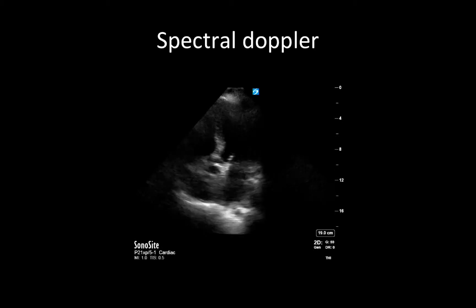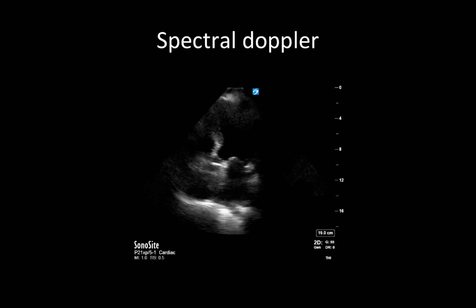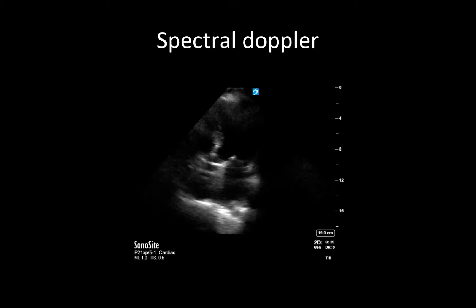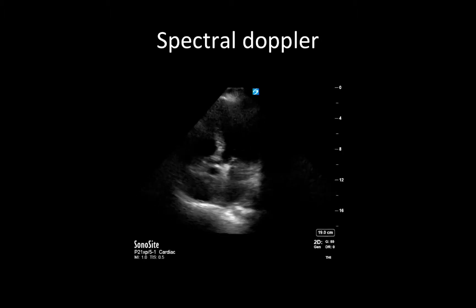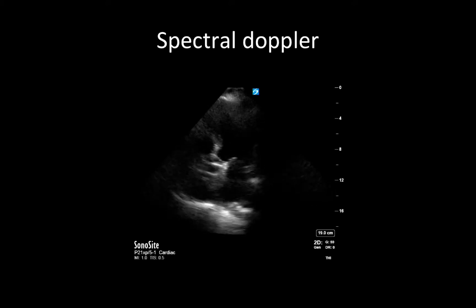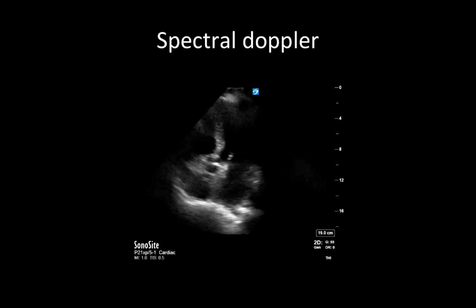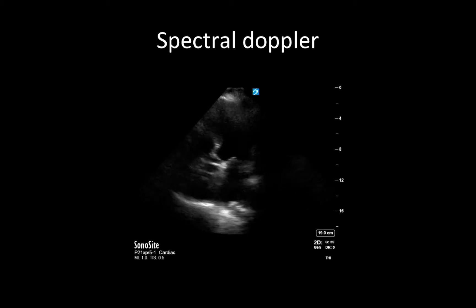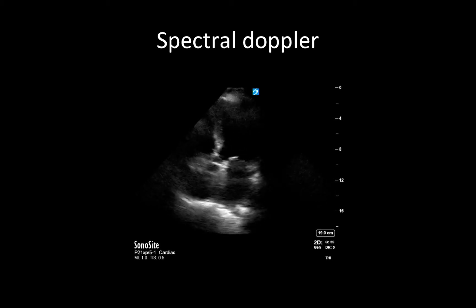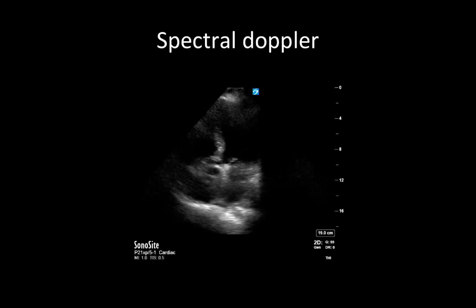Having reviewed all of those two-dimensional findings, in the evaluation for severe aortic stenosis, spectral Doppler really is key. All of those same 2D findings can be seen in aortic sclerosis as well as in severe aortic stenosis. The key to differentiating is the application of spectral Doppler in an apical five-chamber view. We use an apical five-chamber view given that it gives us the best alignment to measure velocities and pressure gradients across the aortic valve, with blood flowing parallel to our probe.